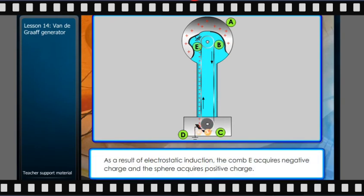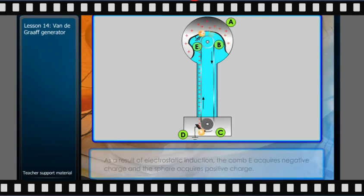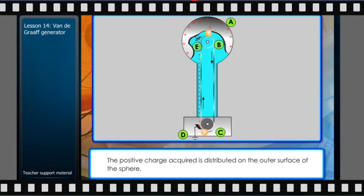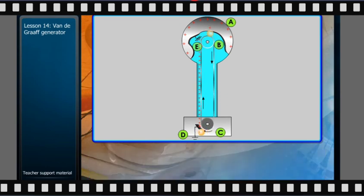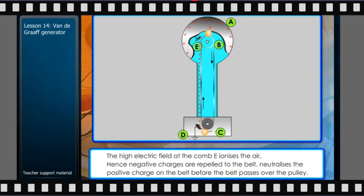As a result of electrostatic induction, the comb E acquires negative charge and the sphere acquires positive charge. The positive charge acquired is distributed on the outer surface of the sphere. The high electric field at the comb E ionizes the air.